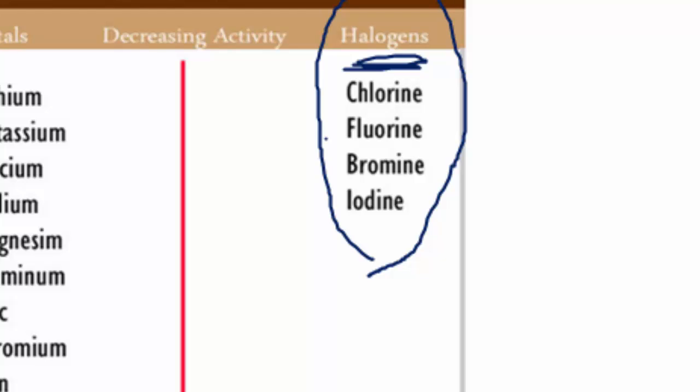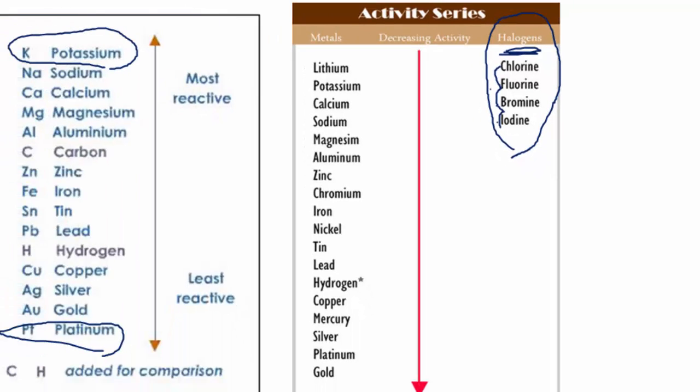The second most active is fluorine, then bromine, then iodine. So chlorine can displace all the other halogens. Iodine cannot displace any of the halogens. And also when we look at this, we can see the same things we had before. Chromium could displace iron, but iron could not displace chromium in a compound.